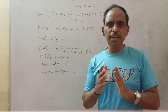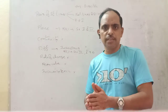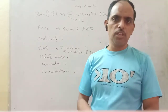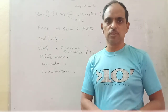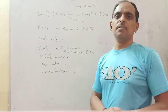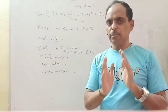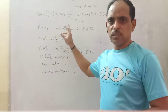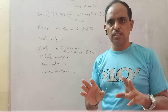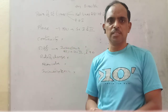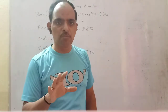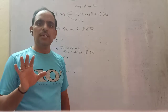Next topic: Three Dimensional Geometry. In 3D geometry, the introduction and coordinate system as well as DRs and DCs remain as they are. However, in the planes topic — exercise 7A — sections 2 and 3 are deleted. The concepts related to the equation of a plane in sections 2 and 3, including example problems, are also reduced.